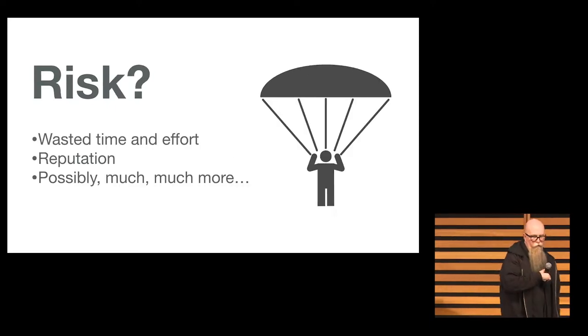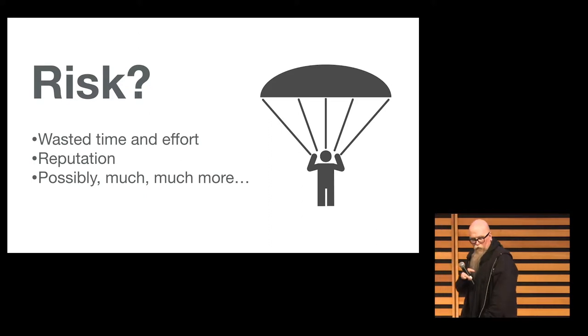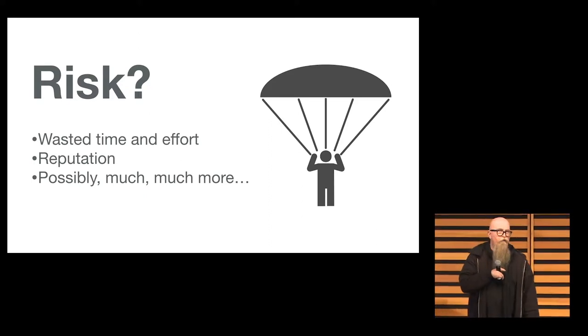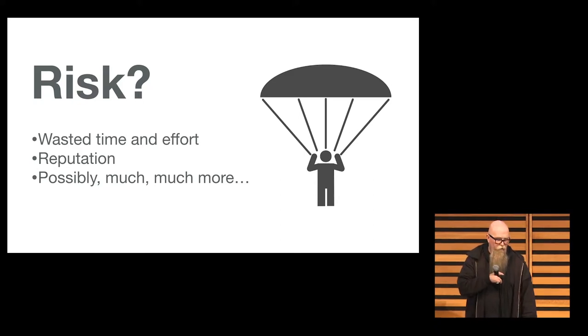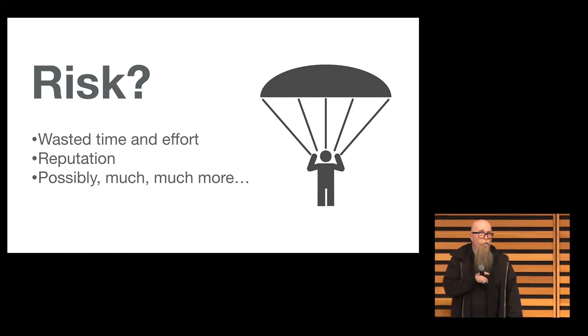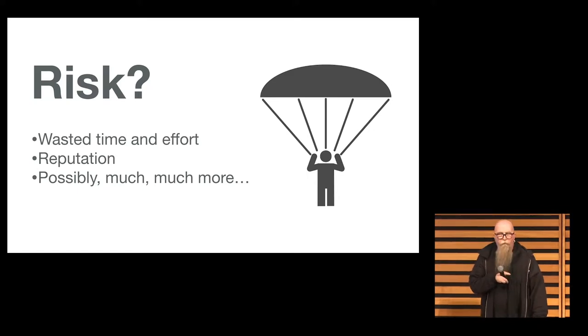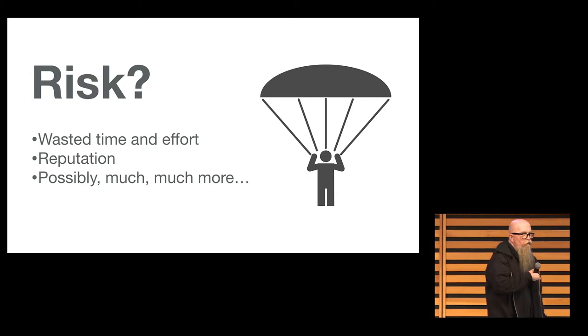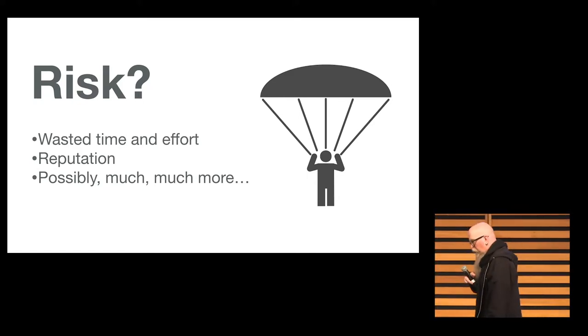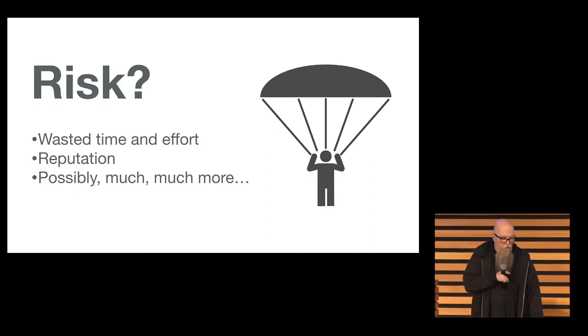Now, the critical thing here in this definition I think is the risk, right? Because in our case, the risks can be anything from the annoying wasted time and effort. And we all know that researchers have way too much to read and they're already having trouble keeping up with it. So any wasted time and effort is going to be frowned upon. But also their reputations are built on the kind of content that they publish, and if they cite something that ultimately or base their research on something that ultimately turned out to be untrue or a problem, their reputation may suffer as well. And then of course, possibly much, much more.